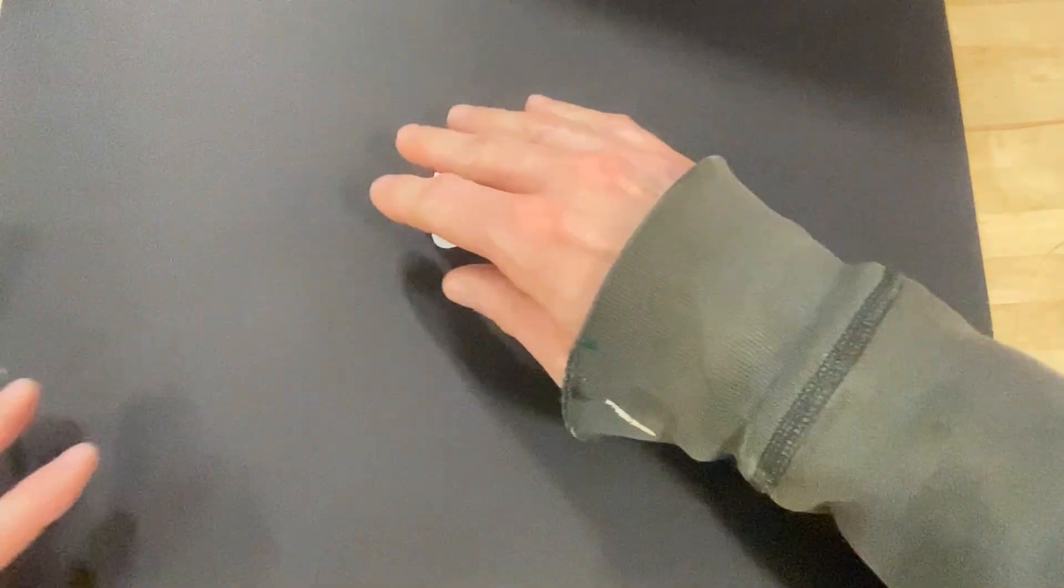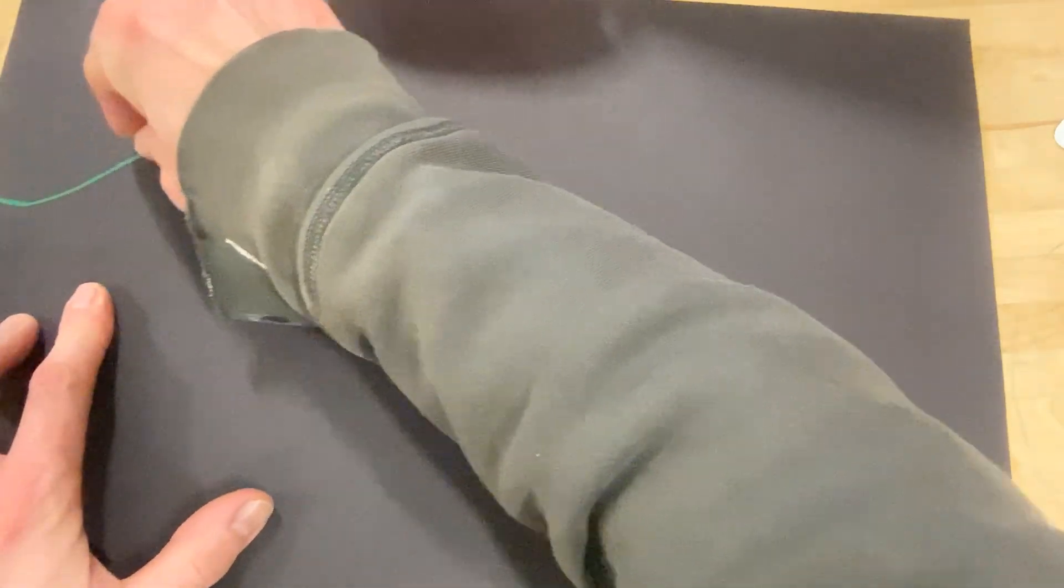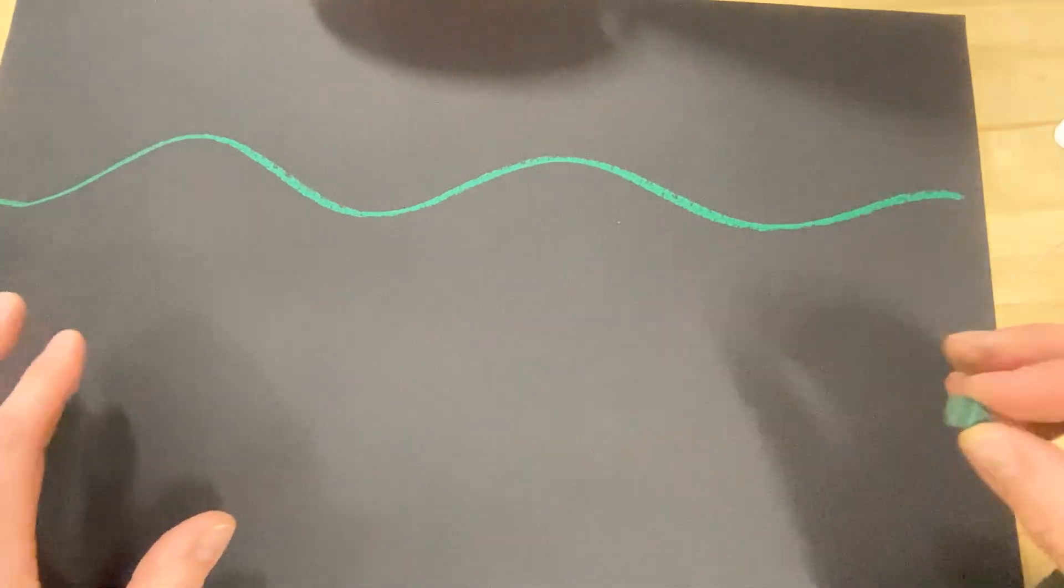So, first thing, I need a wavy line for the cord. And usually, I mean, I like the, I want kind of a teal or dark green cord.